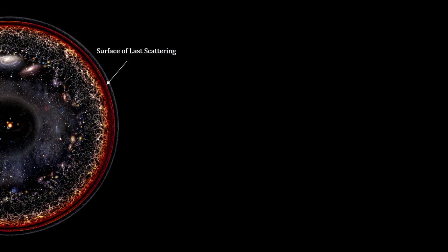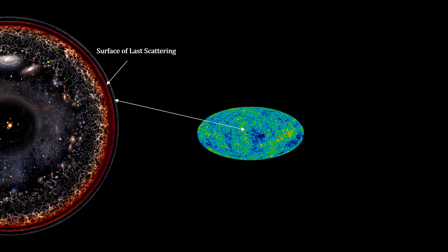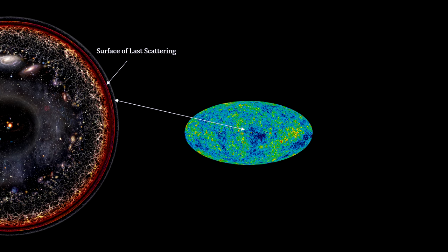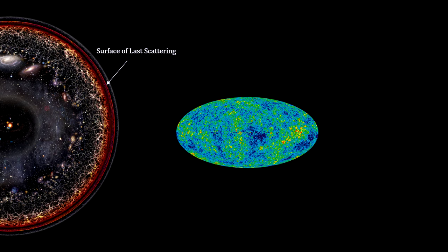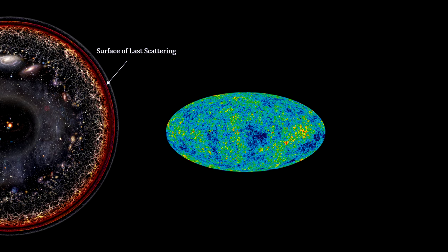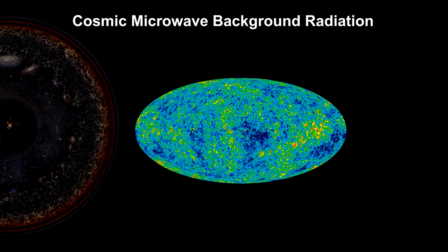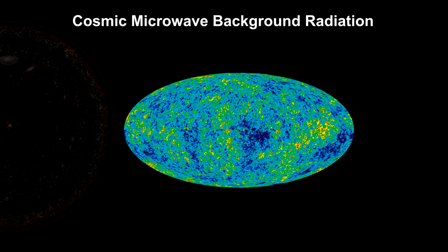Coming back the other way, the surface where the transition from opaque to transparent occurred is called the surface of last scattering. At that time, all the photons in the universe were released. These photons are still with us today. We see them all across the sky in tremendous numbers. They are the Cosmic Microwave Background Photons, CMB.